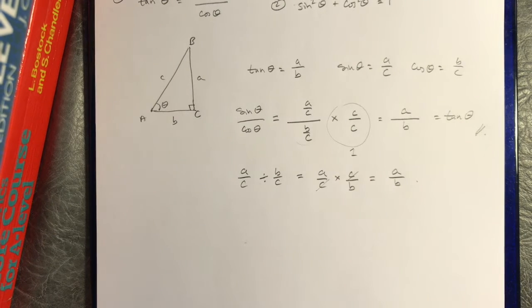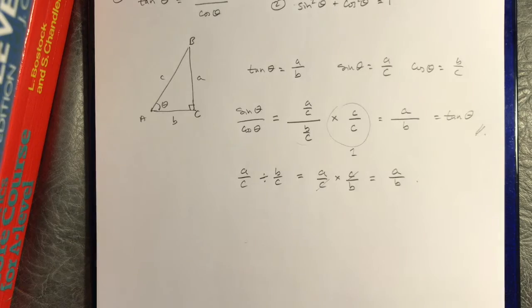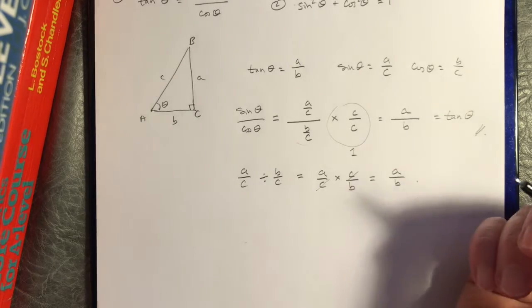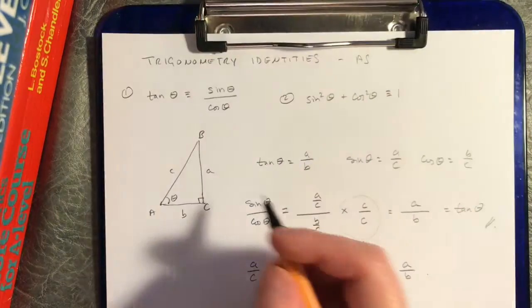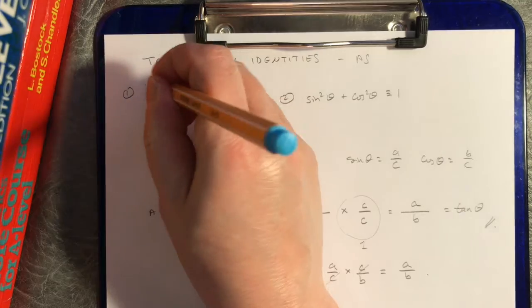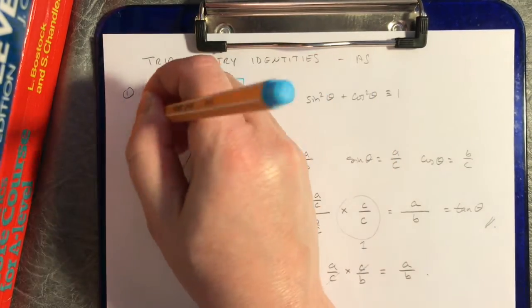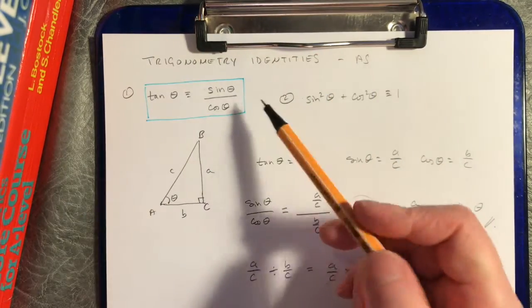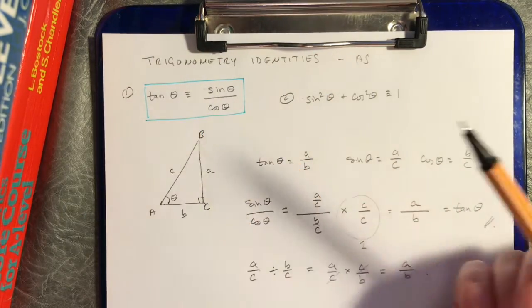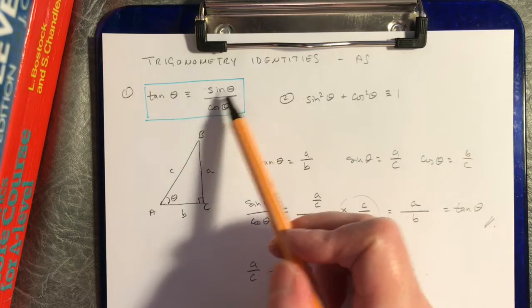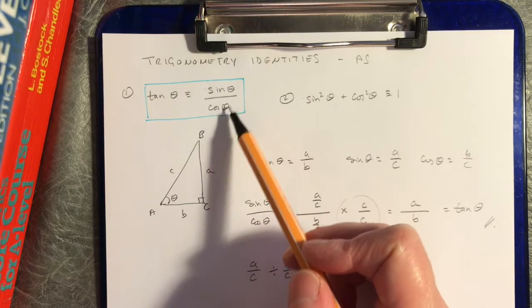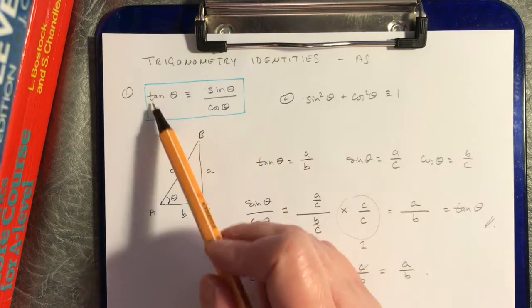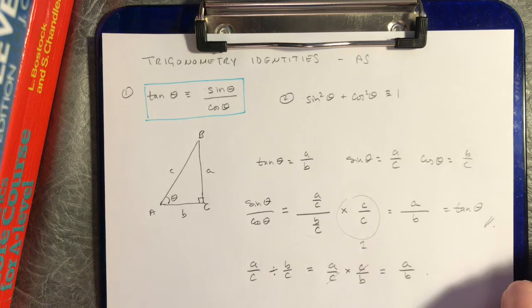Your big takeaway here is that tangent can always be expressed as sine divided by cosine of the same angle. Conversely, if you have sine divided by cosine of the same angle, you can swap it out for tangent of that angle — and that's a really useful identity.